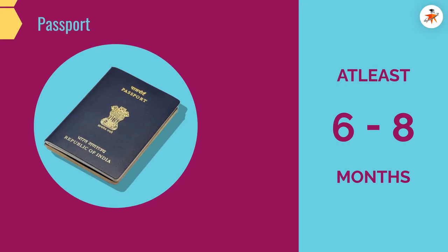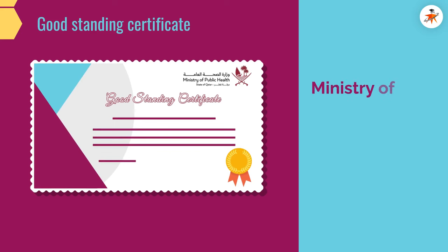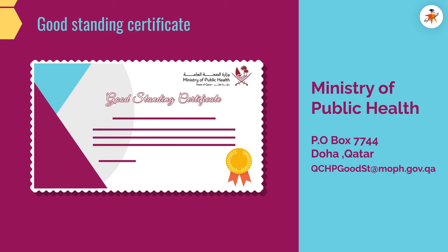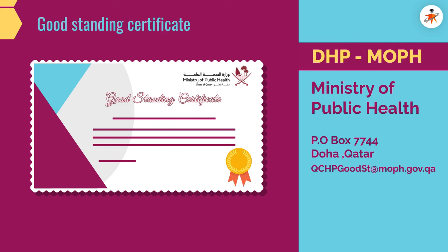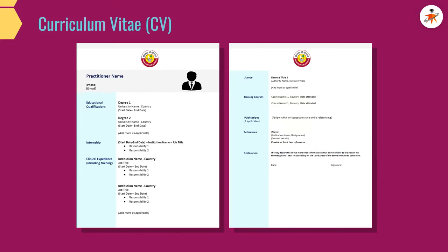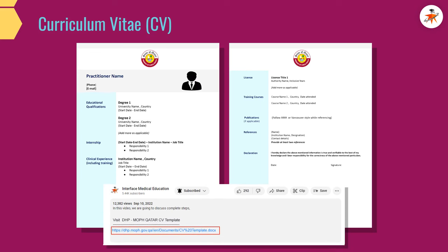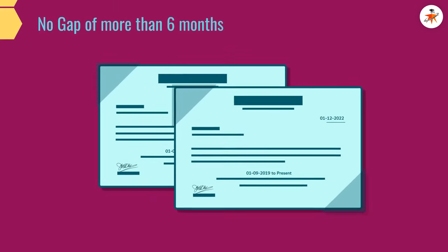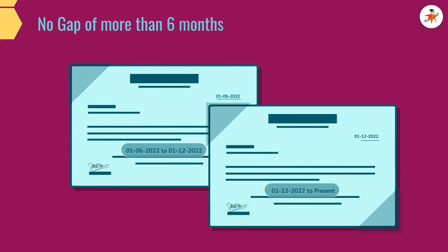A passport-size photograph with a white background and your passport are also required. A good standing certificate will be required in the licensing phase; please request this certificate to be sent directly from your registration authority to DHP MOPH either by email or postal mail — contact details are shared in the description below. Your CV in the required DHP format is needed; a link to this important CV format guide is provided in the description section below. Ensure that you have no gap of more than six months in your professional practice before applying.